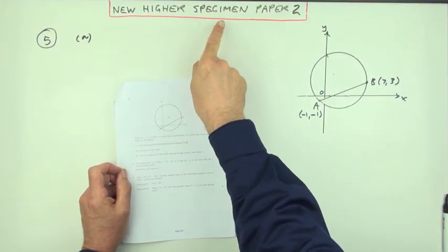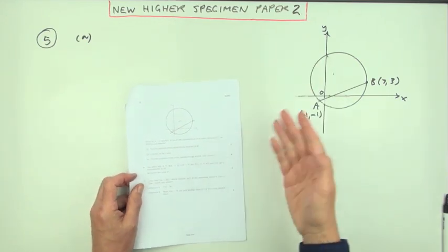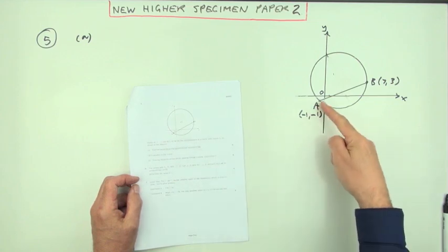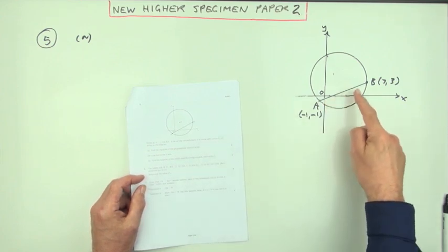Question five then, from the specimen paper for this new higher, this is paper two, circles question. There's a circle, there's a chord drawn, and the first thing it says is what's the equation of the perpendicular bisector of that chord.